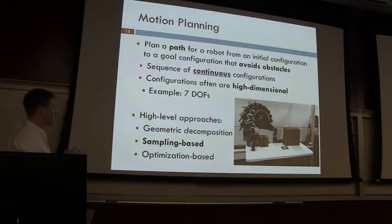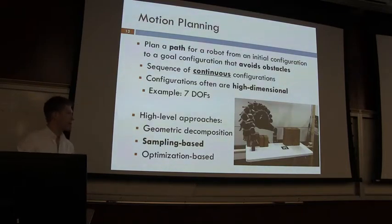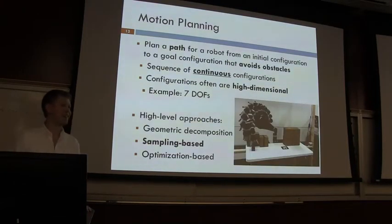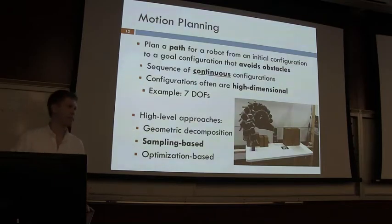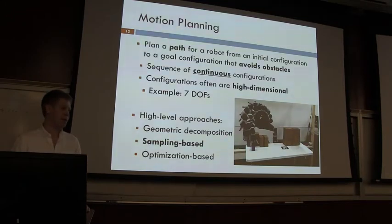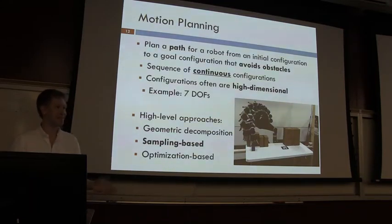There are three types of approaches to motion planning: geometric decomposition (popular in the 70s but doesn't scale to high dimensions), sampling-based methods, and optimization-based methods. What counts as high-dimensional? Above six or seven degrees of freedom for robot arms — the Atlas robot can get into the 30s. Geometric decomposition gets difficult because discretizing the space becomes exponentially large: two configurations per axis across 32 joints gives two to the 32 states.